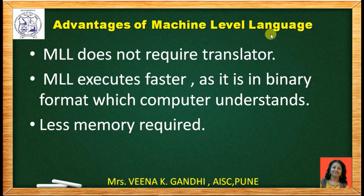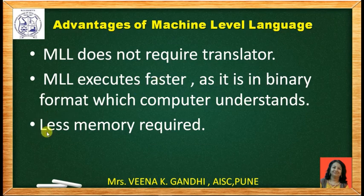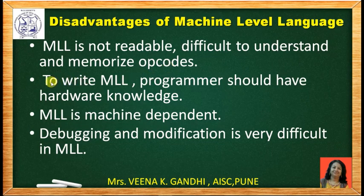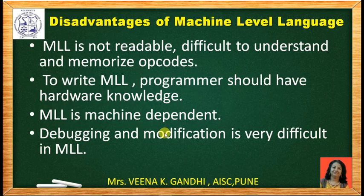Let us see some advantages of machine level language. Machine level language does not require any translator like a compiler or assembler. Machine level language executes faster because it is in terms of 0s and 1s and directly interacts with the computer hardware. It requires less memory. Now let us see some drawbacks of machine level language. Machine level language is not readable. It is difficult to understand and memorize the opcodes. Programmers should have hardware knowledge to write machine level language. Machine level language is machine dependent, meaning a program written on one machine cannot be run on another machine. It is written for a specific architecture only.